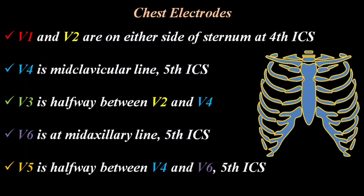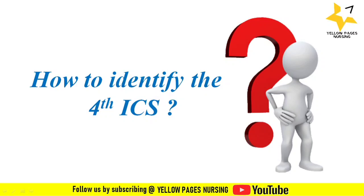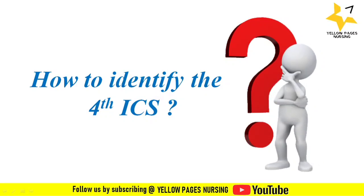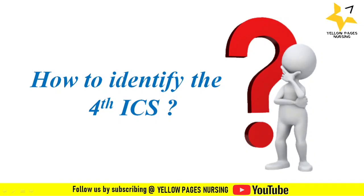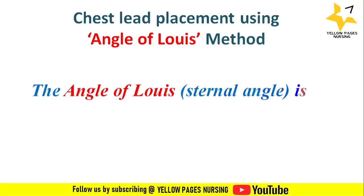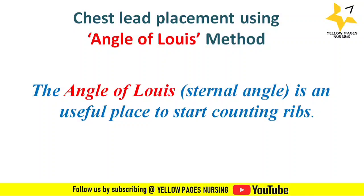We may be confused about how to identify the fourth intercostal space, since chest lead placement begins from there. The Angle of Louis is a useful place to start counting the ribs. Using this technique we can identify the fourth intercostal space. The Angle of Louis is otherwise called the sternal angle.